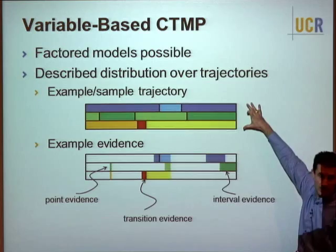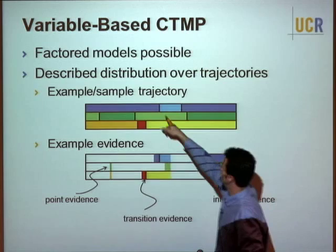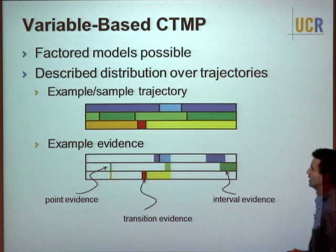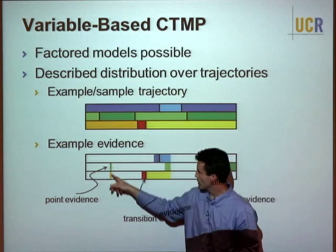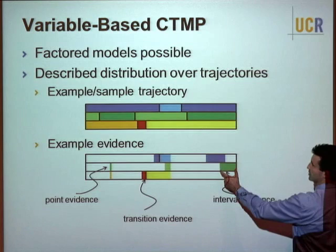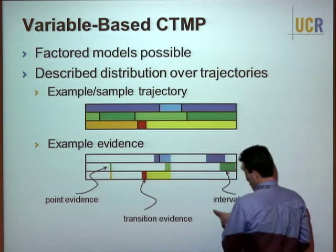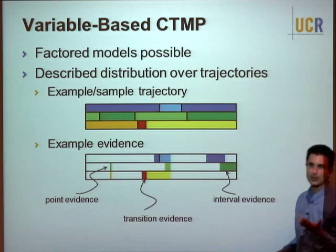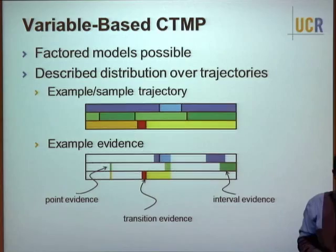Evidence might include: point evidence (knowing the value of a variable at an instant), interval evidence (knowing a variable was in a given state continuously over some period), observed transitions within an interval, or knowing that only one transition occurred in an interval without knowing exactly when. All of these can be incorporated into this evidence model.